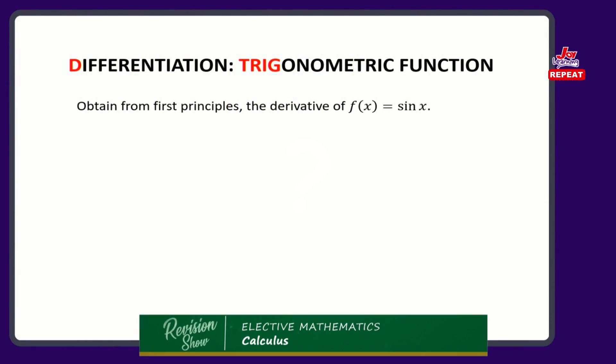Leibniz used the term h. I would not use h — I would use delta something, a lowercase delta. In your textbooks you probably have seen the alphabet h used there. It simply means change — the small change.